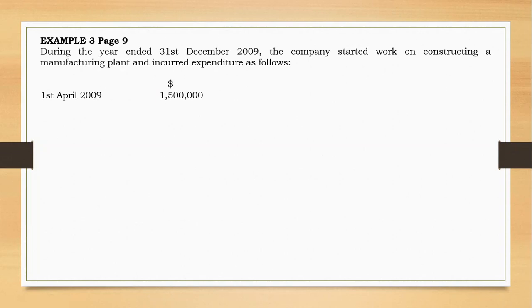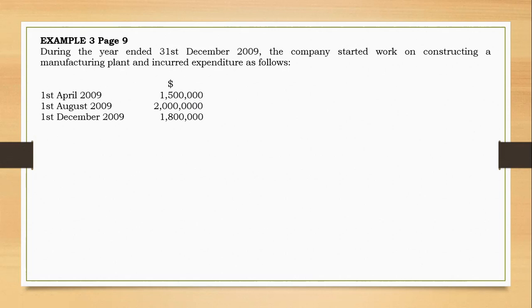First April 2009: $1.5 million. First August 2009: $2 million — this is $2 million, not $20 million. First December 2009: $1.8 million. All of these payments were made out of general borrowing.